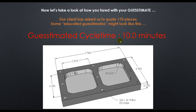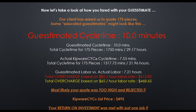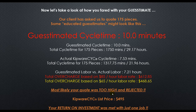Let's go the other way. Let's say you overestimated and guesstimated 10 minutes to machine the part. With a guesstimated cycle time of 10 minutes, we've got 29.17 hours to make 175 parts. The difference between the guesstimated labor and the actual labor was 7.21 hours. At an $85 hourly rate, you overcharged the customer $612.00. At a $65 hourly rate, you overcharged the customer $468.00. Most likely your quote was too high and it was rejected. Again, with a list price of $4.95, your return on investment was met with just one job.